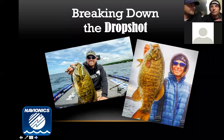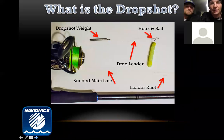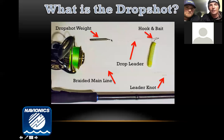All right, let's get down to the basics of the drop shot. Basically, you tie your hook, leave a long drop leader, and attach it to a weight — a little different rig than the Texas rig or Carolina rig. We've got our braided main line, leader knot. We'll go through all this stuff later, but it's a quick rundown for anyone asking what a drop shot is.